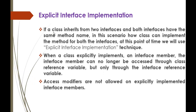Let's jump back to the presentation. Here is the interview question: if a class inherits from two interfaces and both interfaces have the same method name, how can the class implement the method for both interfaces? In this scenario we use explicit interface implementation. When a class explicitly implements an interface member, that member can no longer be accessed through the class reference variable, but only through the interface reference variable. To understand this, we jump into Visual Studio.